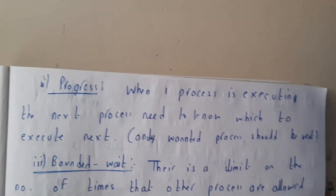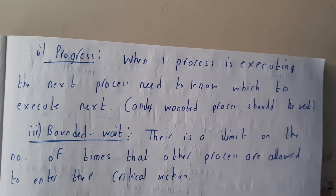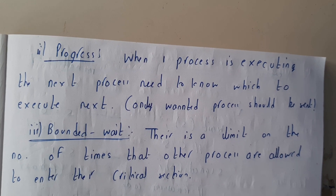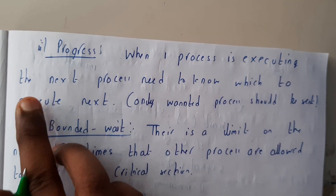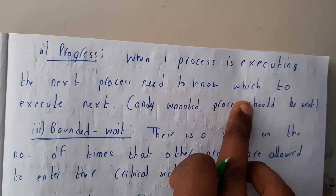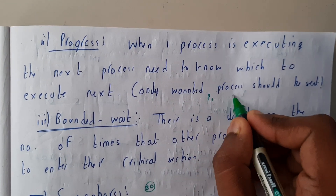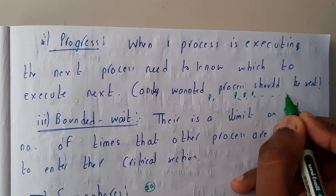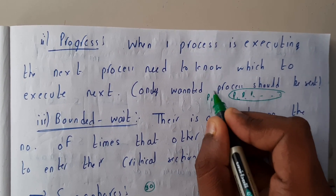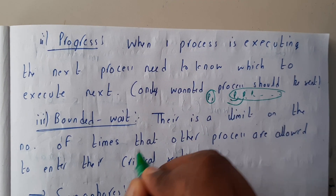The next rule is progress. Progress means that when one process is executing, the next process needs to know which should be executed next. For example, if process P1 is executing and there are P2, P3, P4, P5 waiting, once P1 is done, which process should execute next should also be known.